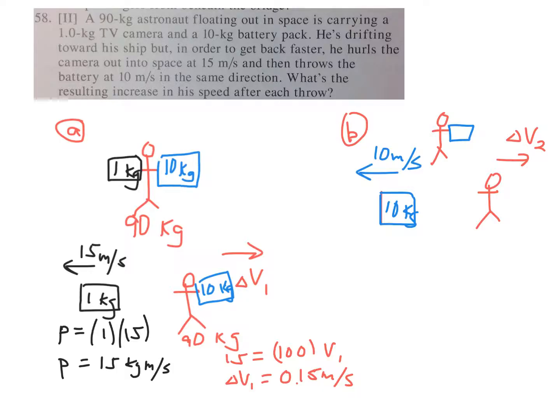Backwards, call this P3, that's 10 times 10 equals 100 units of momentum backwards. That was the Delta P backwards for the battery. The astronaut must pick up 100 more units of momentum, and the mass now of the astronaut is 90 times Delta V2.